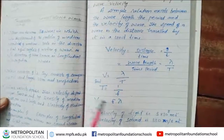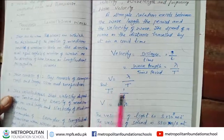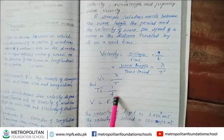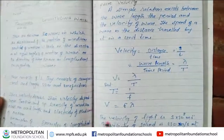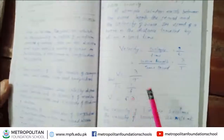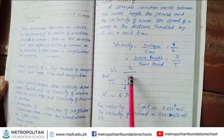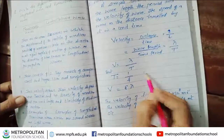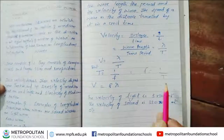Since f = 1/T, we substitute T = 1/f. Therefore v = λ × f, which gives us v = fλ. Frequency is the number of vibrations per second, and its relation with time period is T = 1/f.